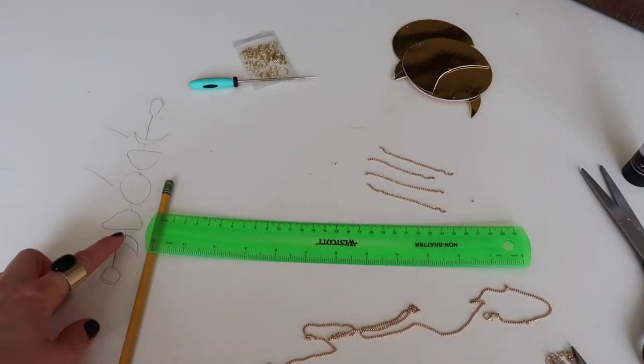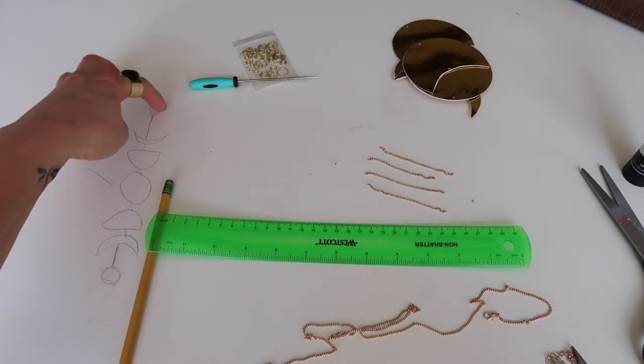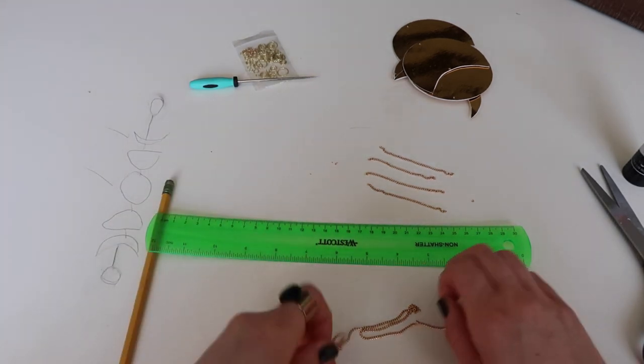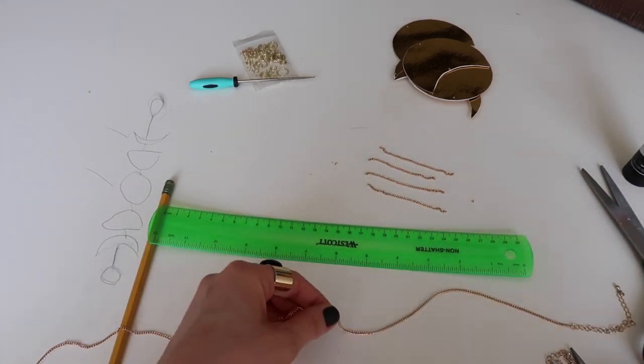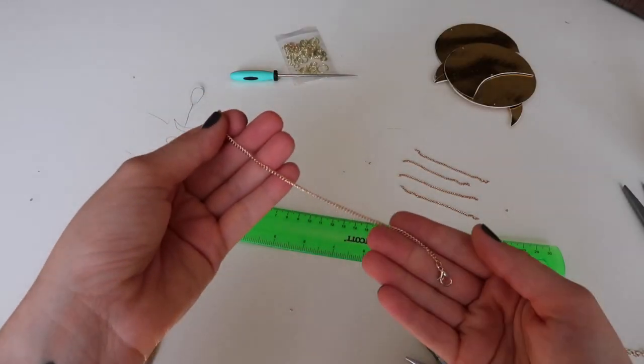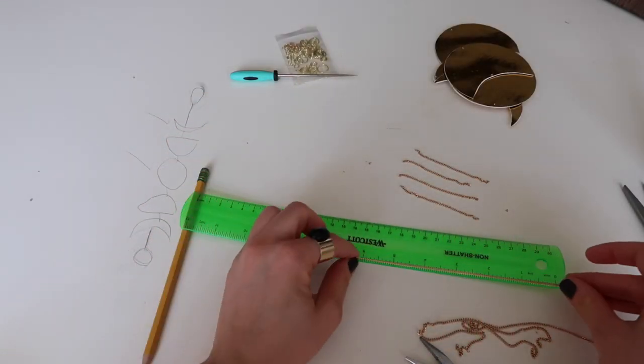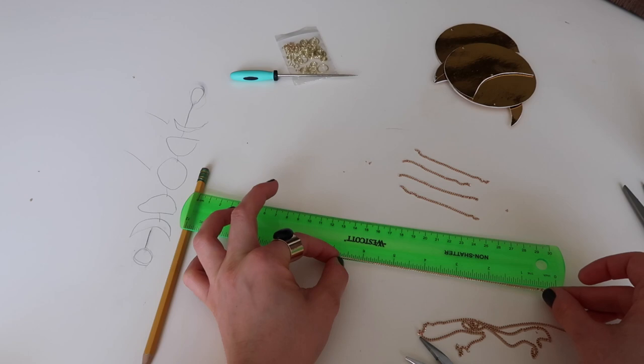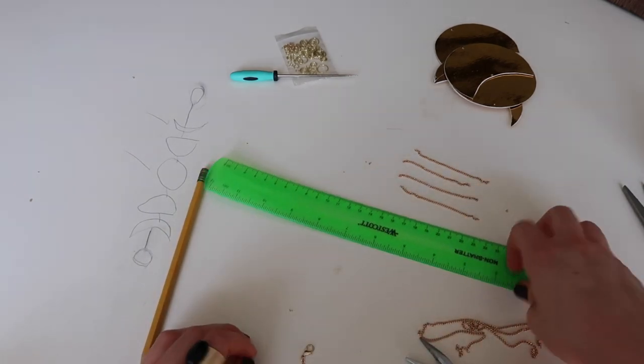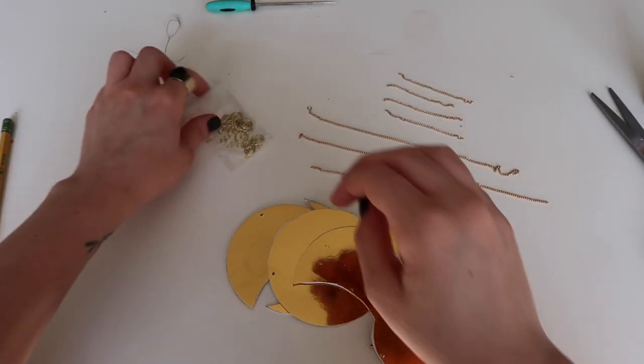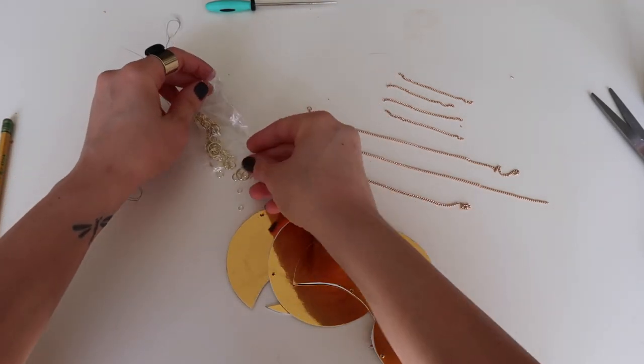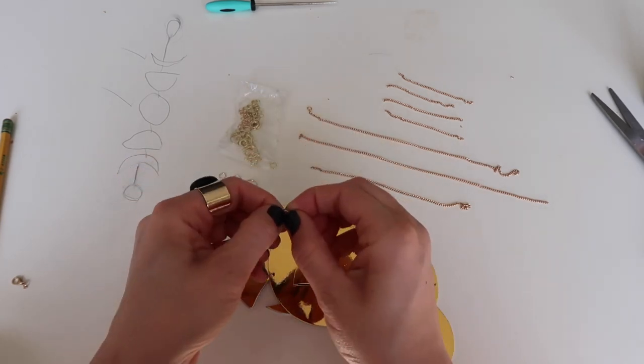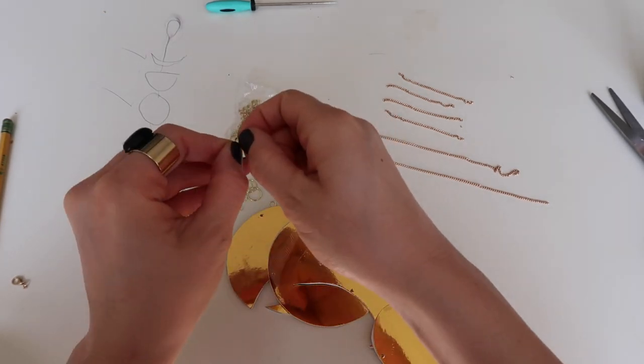And what we need now is to cut a longer chain for the bottom part of our wall hanging and the top part with the hanger. So the longer chains, they're gonna be approximately eight inches each. And we're gonna use this last part for a hanger, which is approximately seven inches. The next step is to attach our jump rings to our chain and after that to our pieces.